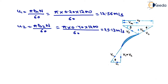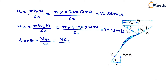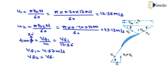From the inlet velocity triangle shown here, tan(theta) equals vf1 divided by u1, that is perpendicular over base. We calculate vf1 using tan(theta) equals vf1 over u1, where u1 is 12.56 and theta is 20 degrees. After solving, vf1 equals 4.57 meters per second. Since vf1 equals vf2, vf2 is also 4.57 meters per second.